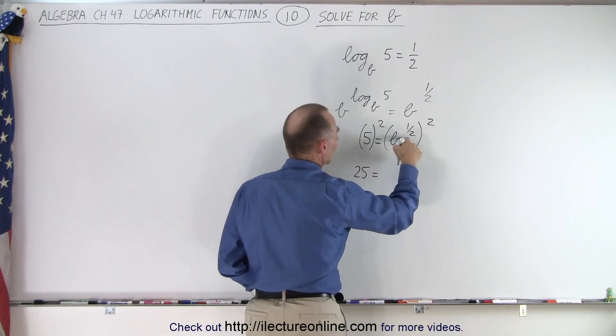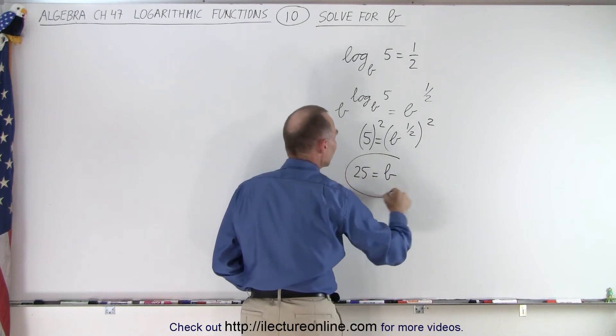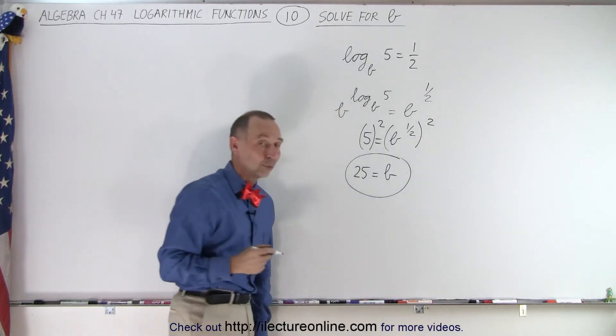And on the right side, b to the 1 half power squared simply gives me b, which means that b in this case equals 25. And that's the base of the logarithmic function.